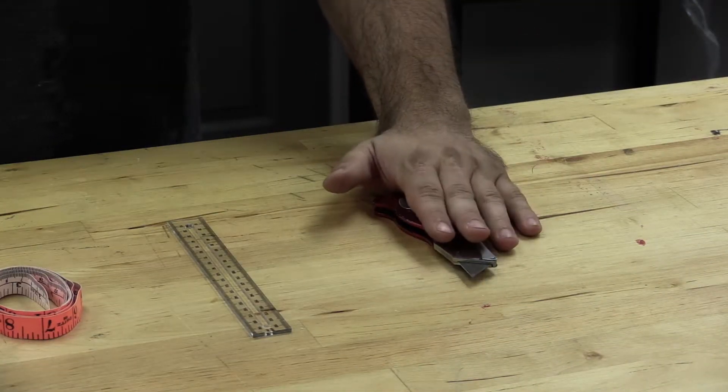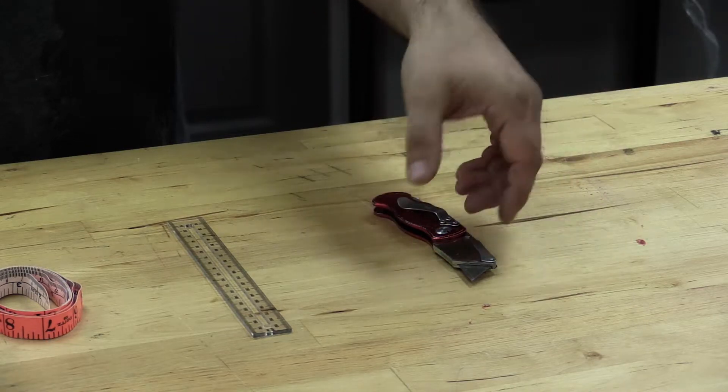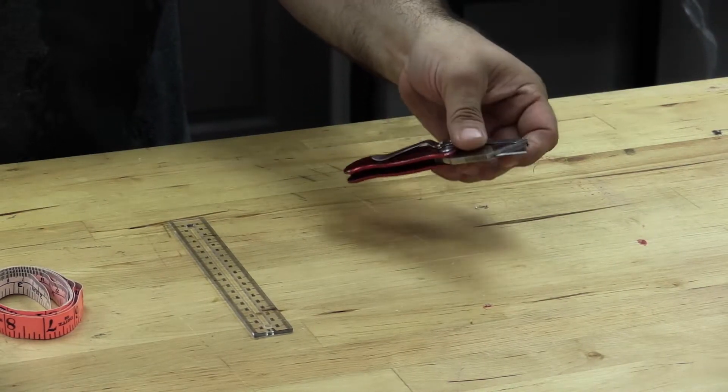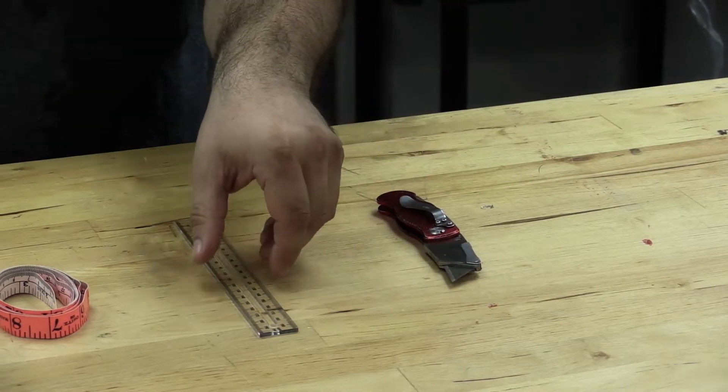All right, let's go over the tools. So you can go ahead and get yourself an X-Acto knife kit or a nice utility knife. Make sure to replace the razor blade. You want something extremely sharp, nothing dull.